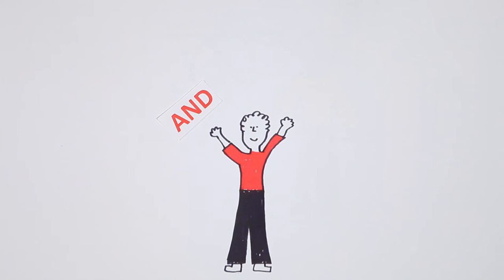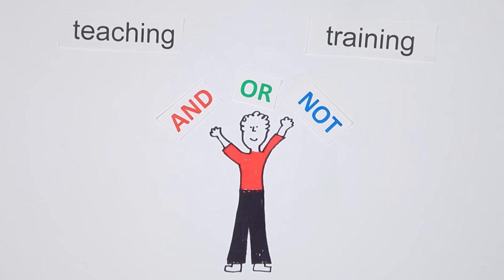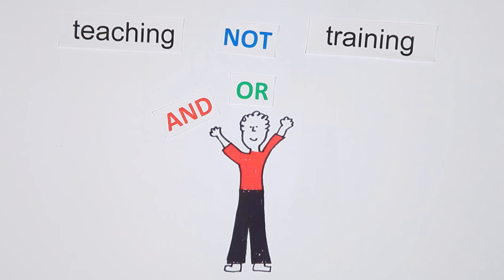And then there's and, or, and not. These can increase or decrease your search results. And retrieves results with both words. Or retrieves results with either word. Not excludes results that contain a specific word.